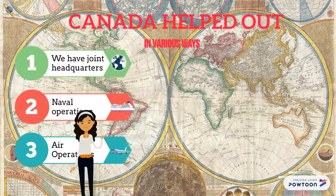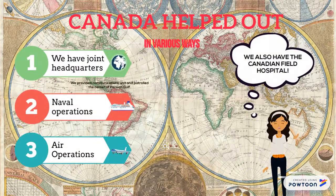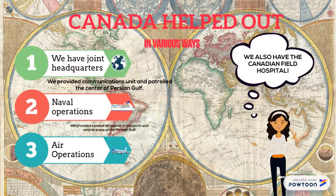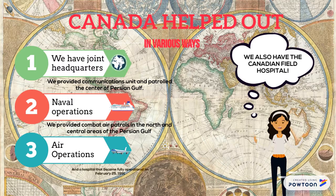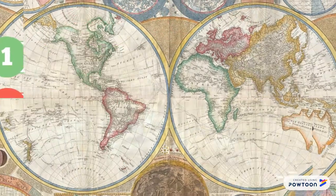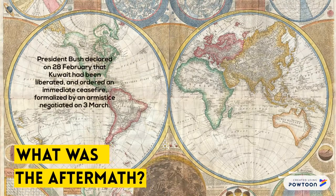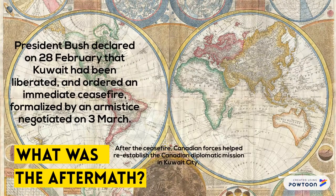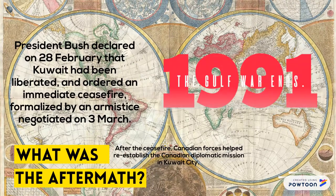Canada provided joint headquarters, naval operations, air operations, and the Canadian Field Hospital. President Bush declared on February 28 that Kuwait had been liberated and ordered an immediate ceasefire, formalized by an armistice negotiated on March 3.